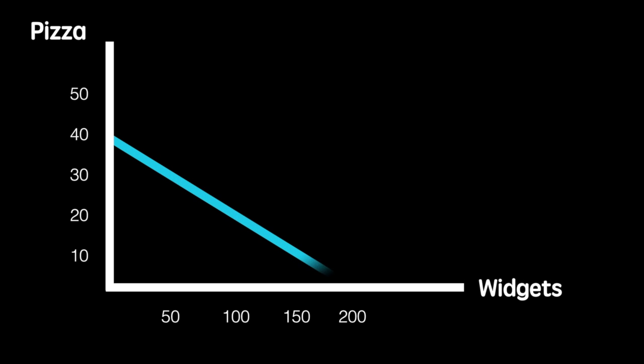Country Y can produce either 40 pizzas or 200 widgets before specializing. Country X can produce 50 pizzas or 100 widgets before specializing.